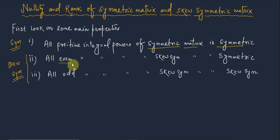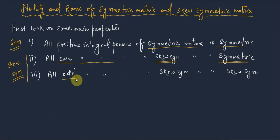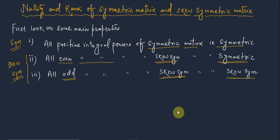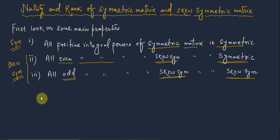All even integral powers of a skew-symmetric matrix are again symmetric, but all odd integral powers of a skew-symmetric matrix remain skew-symmetric. The proof of these results is very simple.